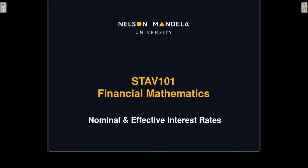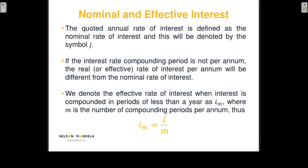Welcome to this lecture on nominal and effective interest rates. Up until this point we have done compounding interest where the interest rate was given per annum and the compounding period was also per annum. But it's not necessarily the case that your compounding period will always be per year. So it's common practice to state the interest rate per annum and then also give the compounding period. The quoted annual rate of interest will be called the nominal rate of interest and we usually denote that with the symbol J.